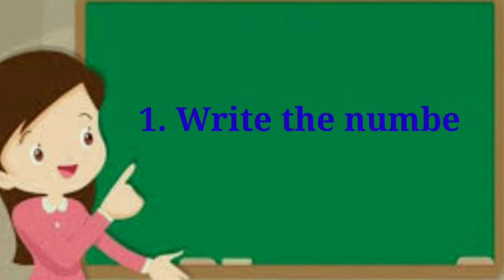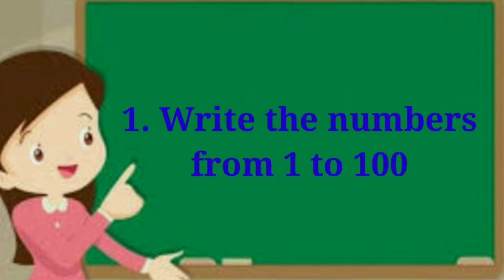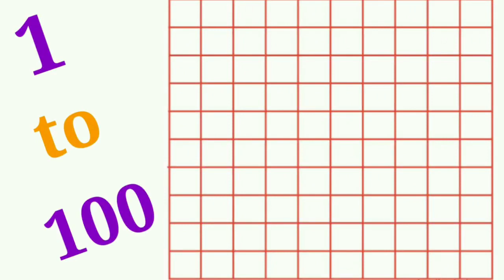First bit: write the numbers from 1 to 100. See children, here one grid is there — a number grid. So you have to write the numbers from 1 to 100. Let us write: 1, 2, 3, 4, 5, 6, 7, 8, 9, 10.